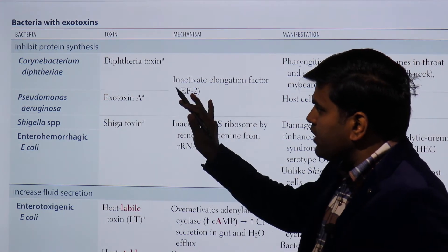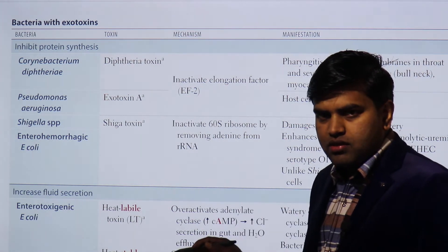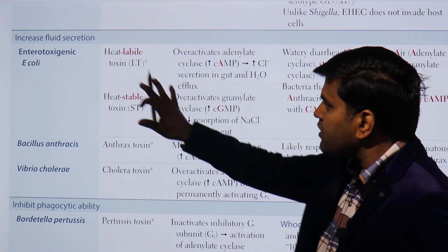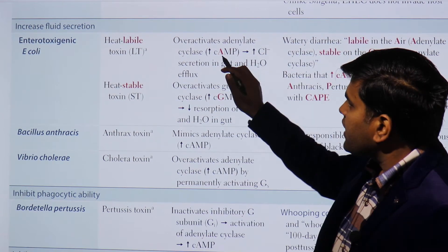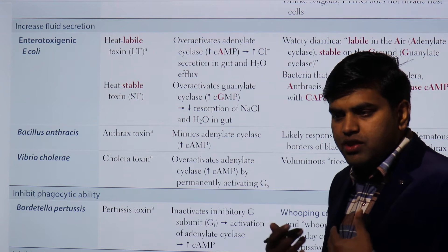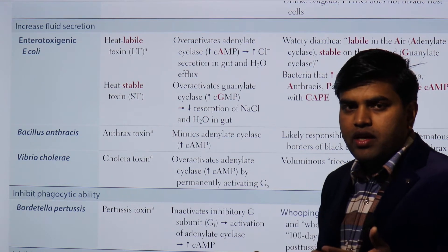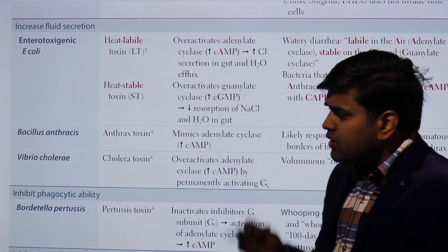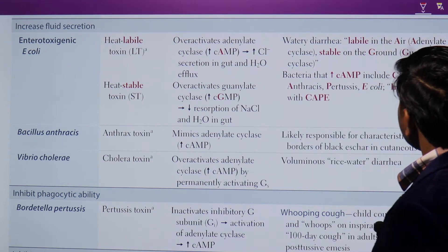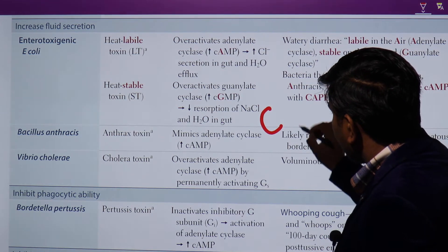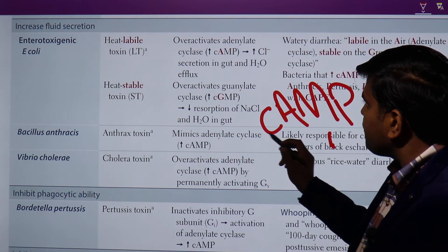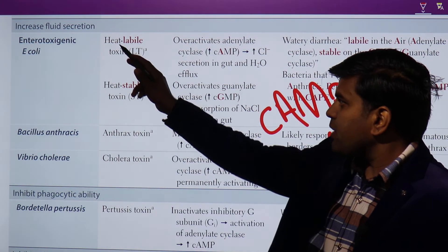We've covered bacterial exotoxins that act by inhibiting protein synthesis. Now let's discuss exotoxins that act by increasing fluid secretion — specifically those that increase cyclic AMP inside your cell. Cyclic AMP is the second messenger here; increasing it causes fluids to be secreted out of cells. You can remember the organisms using the mnemonic CAMP: C for Cholera.